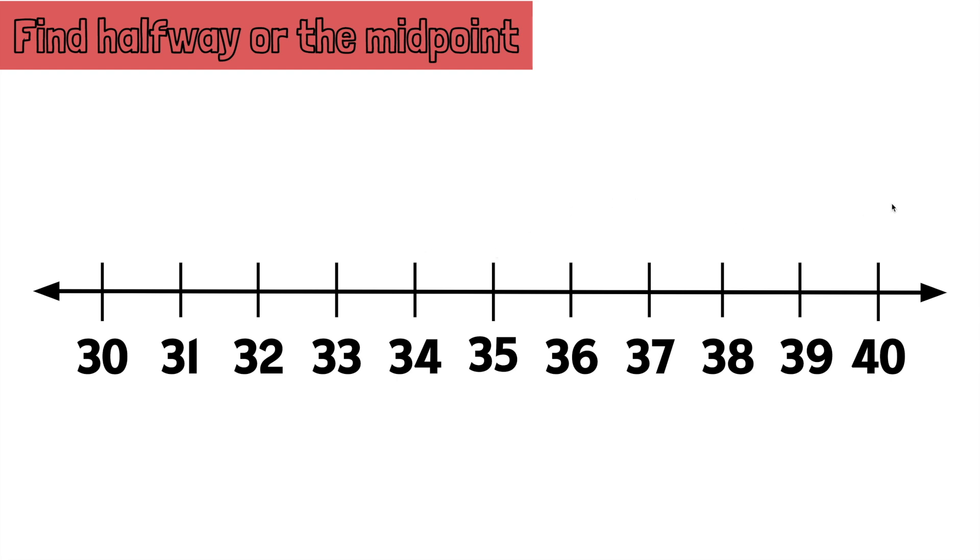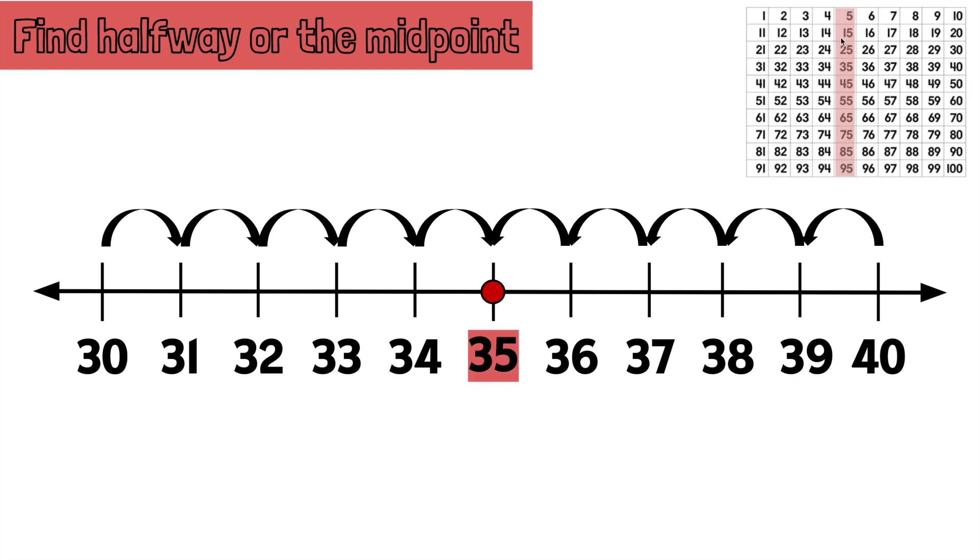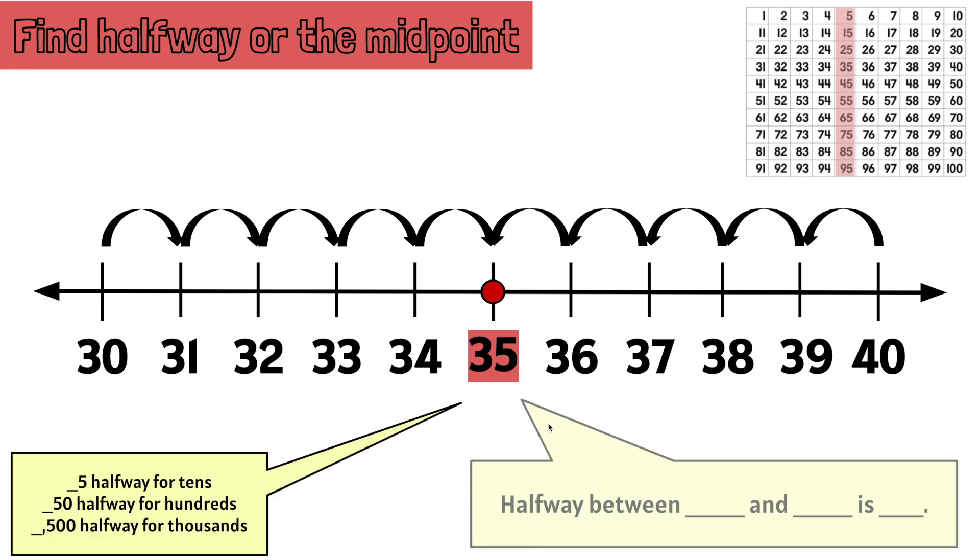Now let's go ahead and hop inward until we meet. We notice that halfway between 30 and 40 is 35. Now remember, when we're finding the midpoint between 10s, like 30 and 40, the halfway point will always end in a 5. We notice we have 35. Halfway between 30 and 40 is 35.